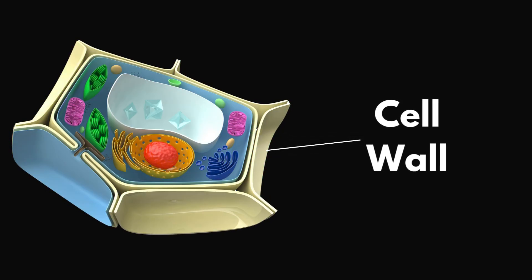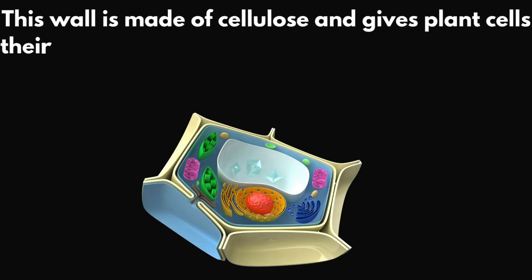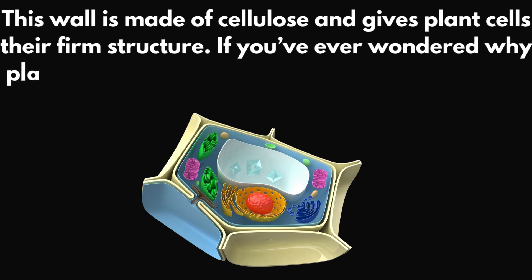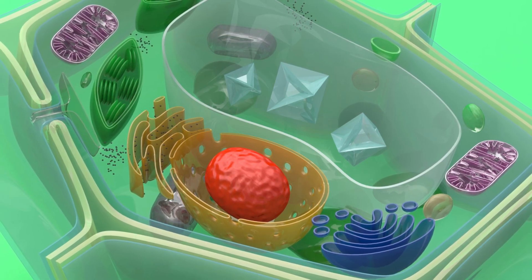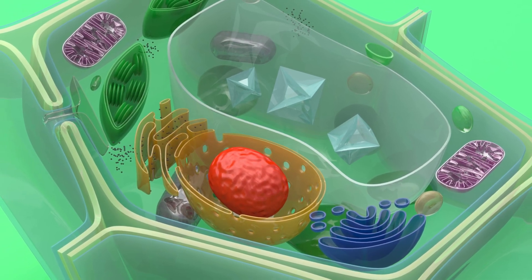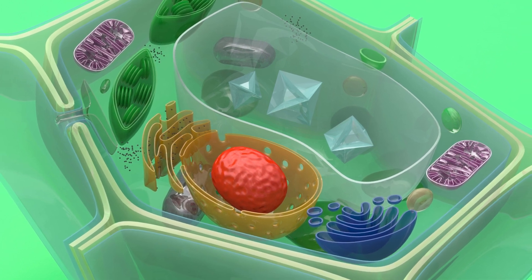First, they have a cell wall, a strong, rigid layer outside the cell membrane. This wall is made of cellulose and gives plant cells their firm structure. If you've ever wondered why plants can grow tall and stiff without bones, it's thanks to the cell wall. It also helps protect the cell from damage and maintains its shape, kind of like a brick wall supporting a building.